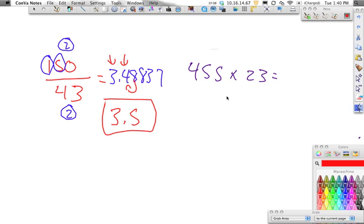Now on the next one, we have 455 times 23. Okay, and our answer is going to be 10,465.